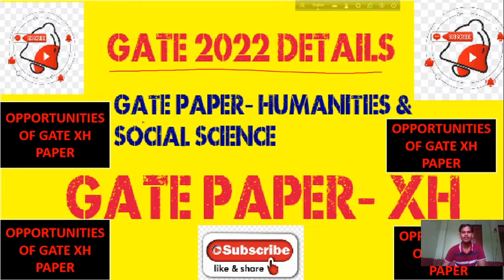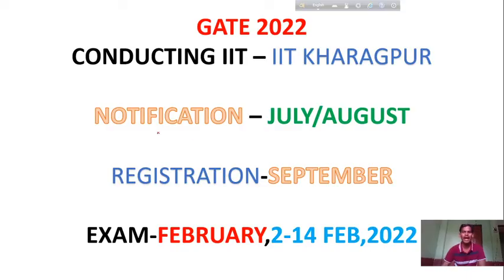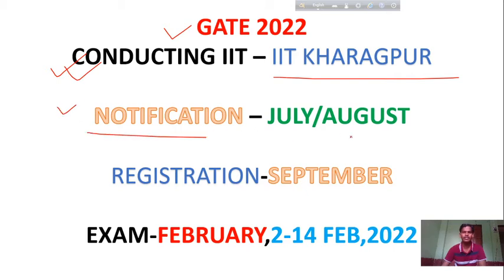So, GATE 2022 details — the GATE paper is GATE Humanities and Social Science, and the name of the paper is XH. IIT Kharagpur will conduct the GATE 2022 exam. You will get the notification either in July or August, and GATE registration will start in September.